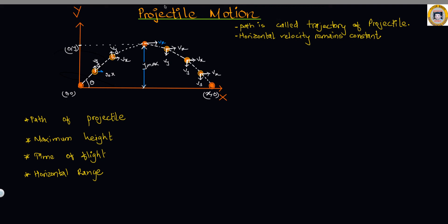Hi, it's me Tutor Binod. In this video we are going to review projectile motion. Projectile motion is a motion when an object is thrown into the atmosphere so that it falls under the action of gravity, following a certain parabolic path known as the trajectory. Let's now find the path for a projectile.